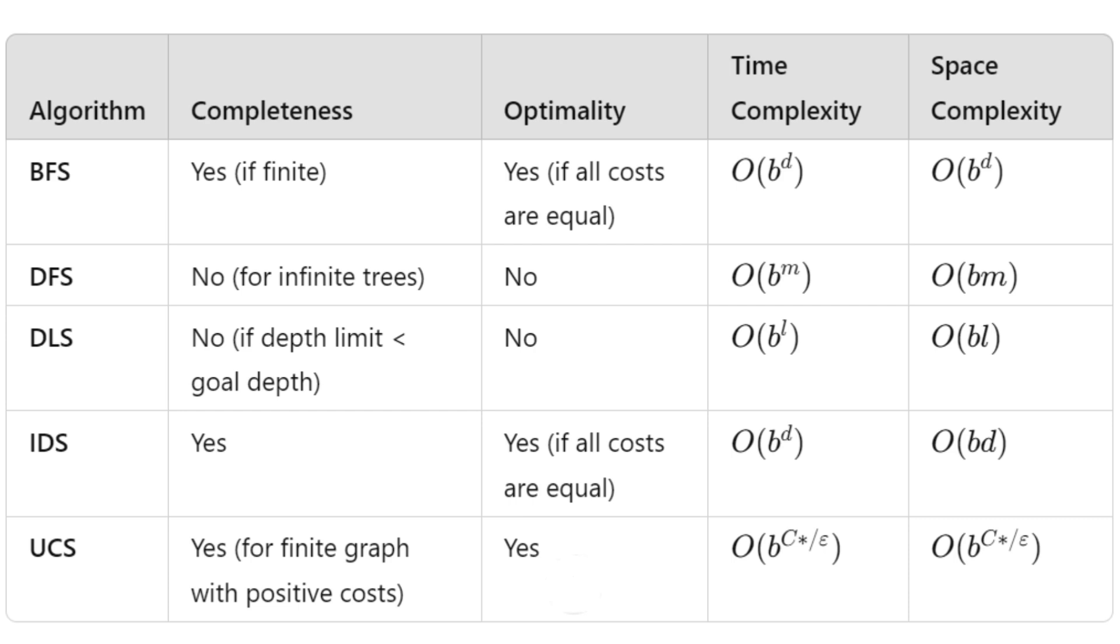Compared to BFS, UCS is optimal even when edge cost varies, while BFS assumes uniform cost. Compared to depth first search and depth limit search, UCS does not suffer from infinite depth issues, but requires more memory.